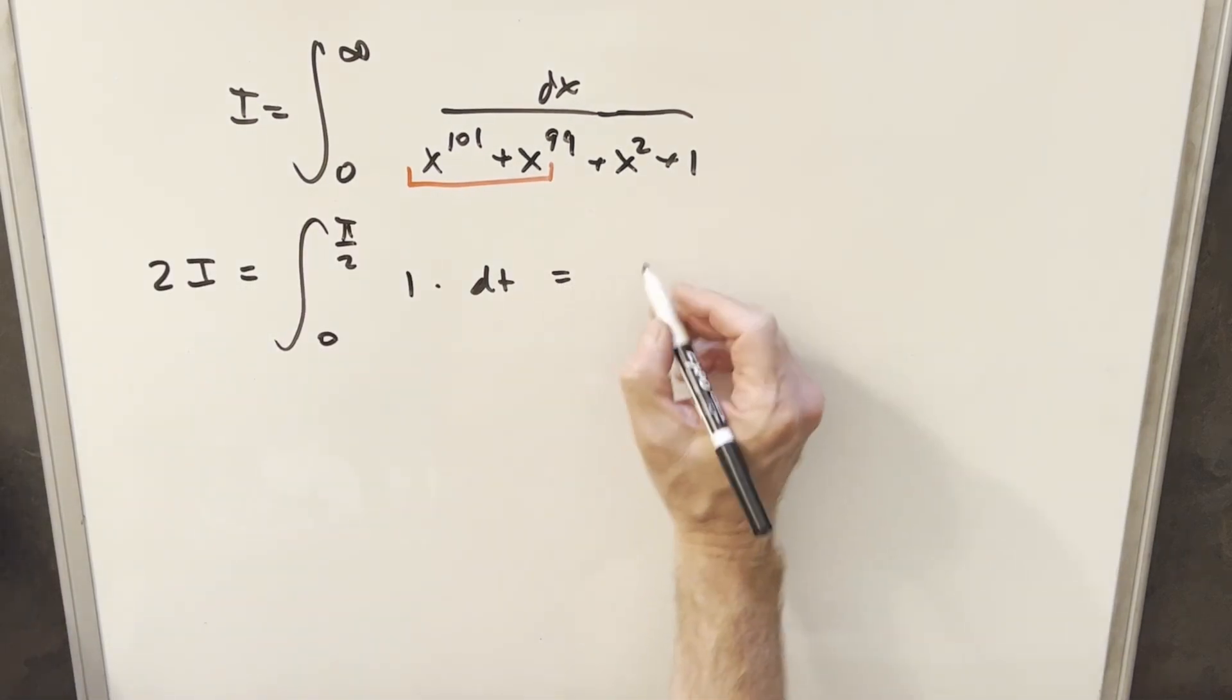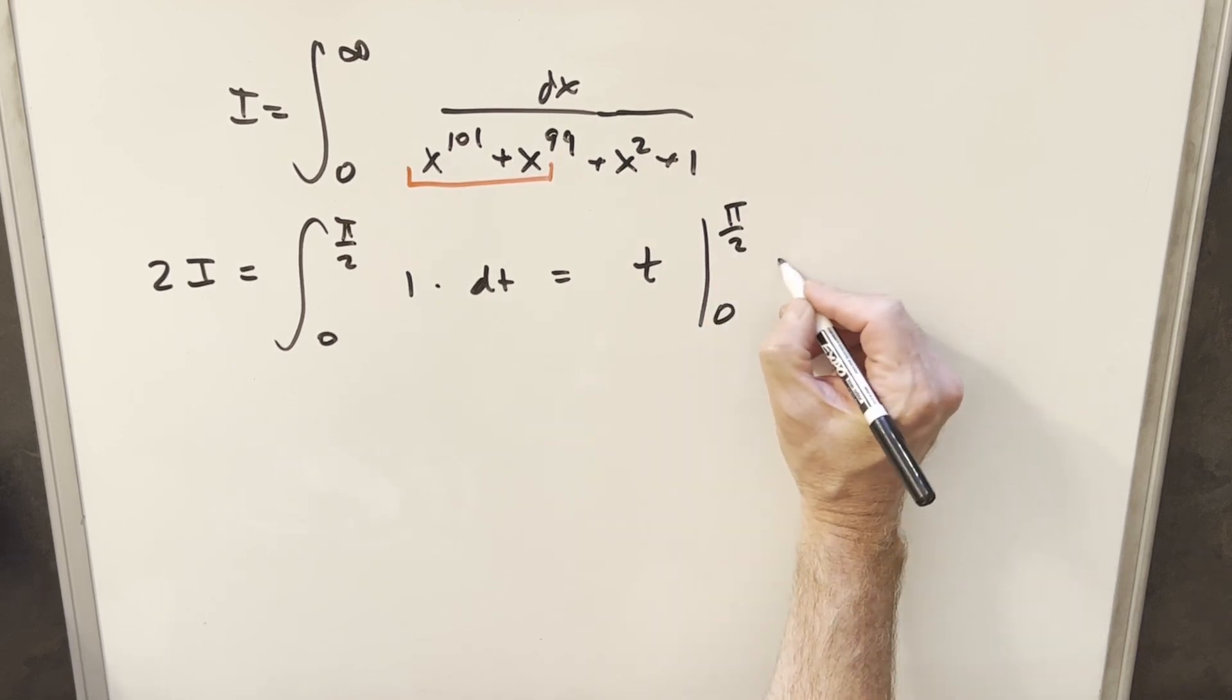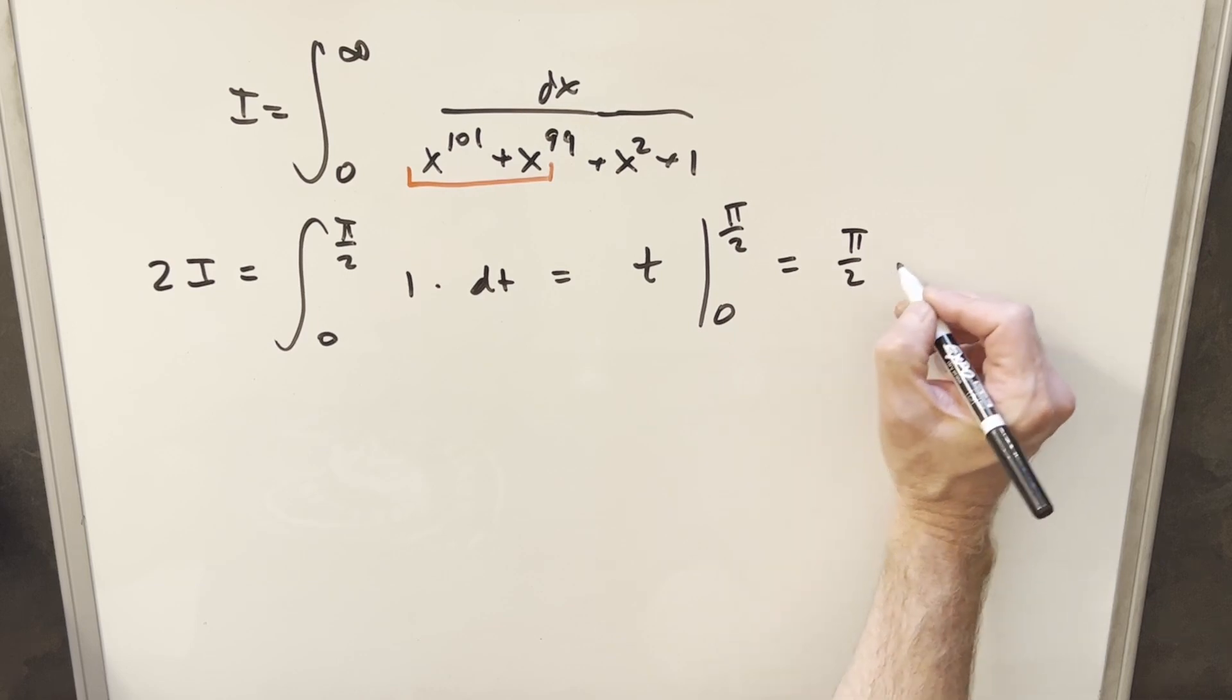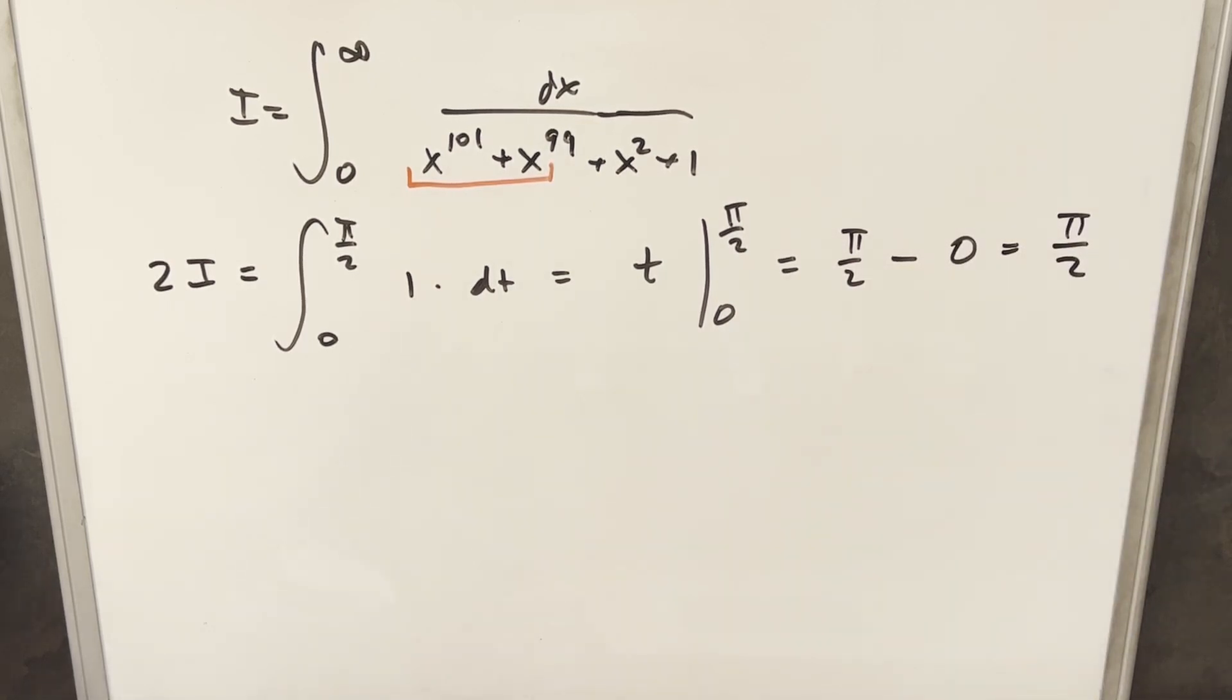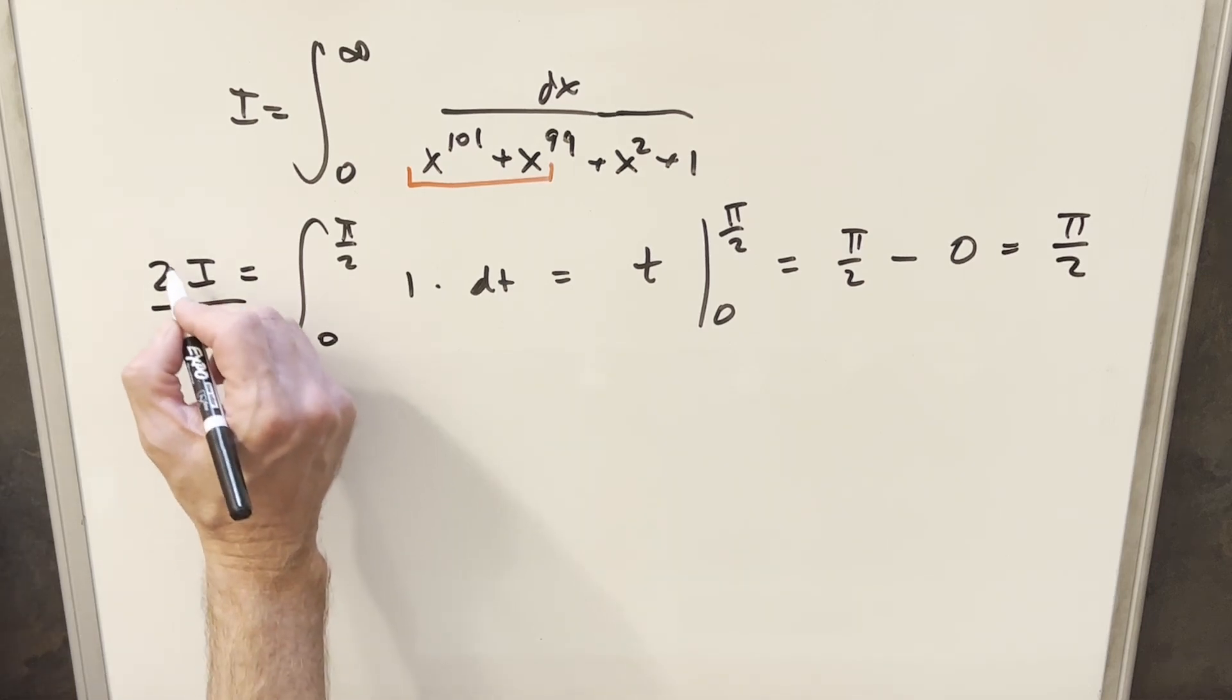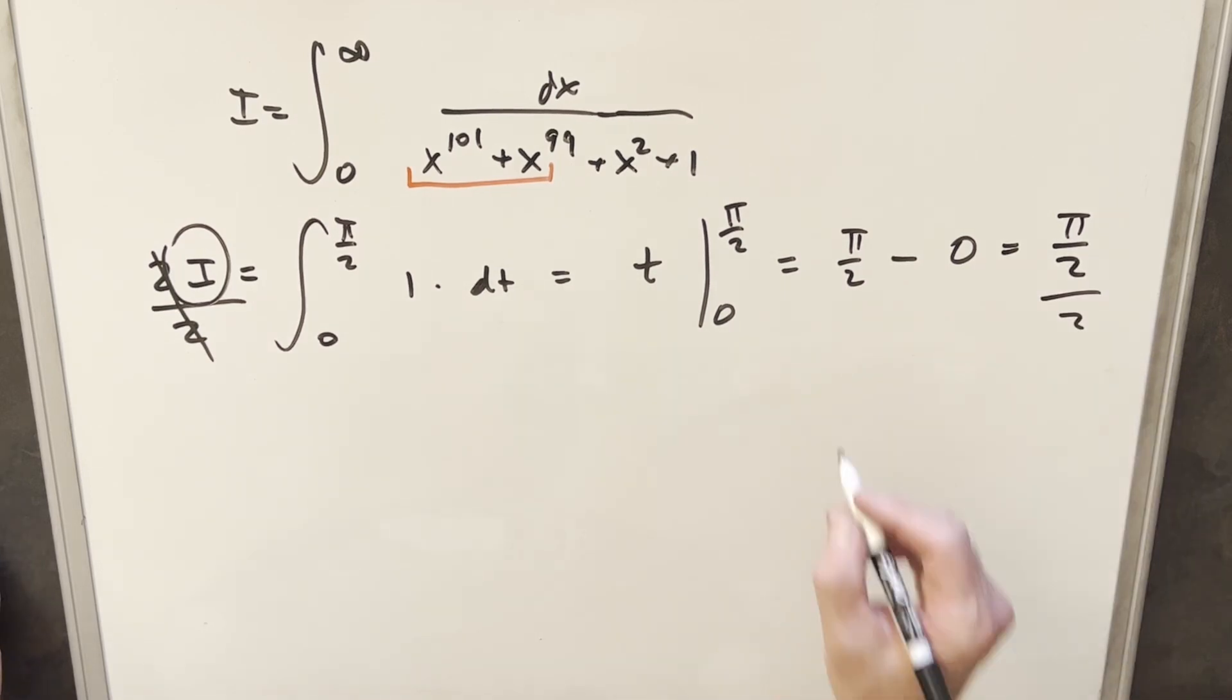All right, so integrating this, we're just going to have t evaluated from pi over 2 to 0. Plugging that in, we're going to have pi over 2 minus 0 equals pi over 2. And the only thing we need to do is just going to remember this is two copies. So we'll divide by 2 in order to solve for our original integral. And so for our final solution, we have pi over 4.